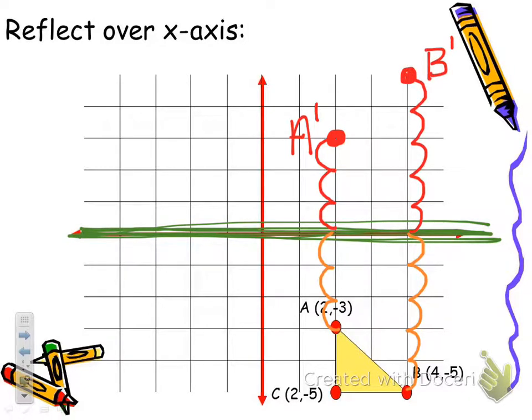And C down there at the bottom, at (2, -5), also takes 5 units to get to the mirror. So I need to go 5 units above the mirror, and that is where C prime will go. Now we'll draw the new triangle. Notice it's the same size, same shape, but it's the opposite—it is reflected over the mirror.